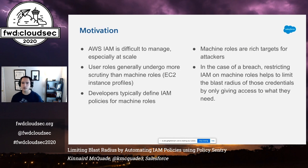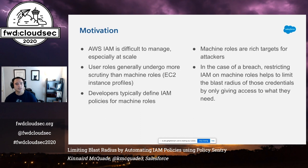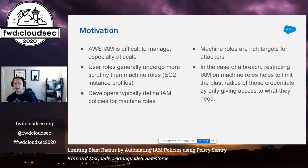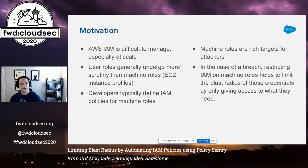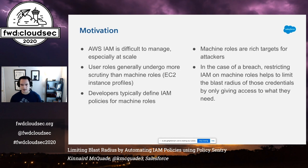User roles typically undergo more scrutiny and have fancy conditions and whatnot. Machine roles, on the other hand, do not. Developers typically define these IAM policies for machine roles, and those machine roles are rich targets for attackers. Some recent publicized breaches have drawn attention to the risks of server-side request forgery. But overprivileged IAM policies have continued to be an overlooked issue, partially because of the difficulty in achieving least privilege with IAM at scale. If least privilege were practiced on those IAM roles from those breaches, you could limit the blast radius by only giving access to what they need and nothing else.